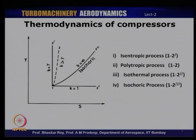This is a thermodynamic representation of compression on a temperature-entropy diagram — the TS diagram — whereas what we saw previously was the pressure-volume diagram. One can express the compression process in either temperature-entropy coordinates or pressure-volume coordinates. Most of the time we will be using the temperature-entropy diagram because it is easier to visualize isentropic and non-isentropic processes on TS coordinates.